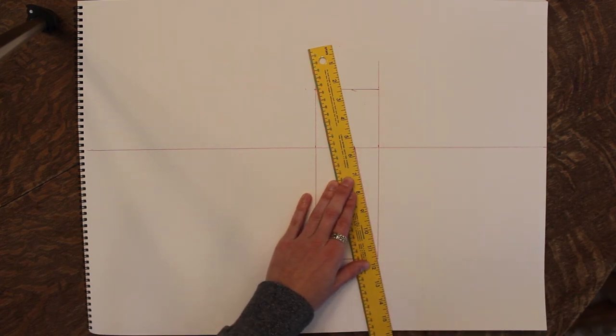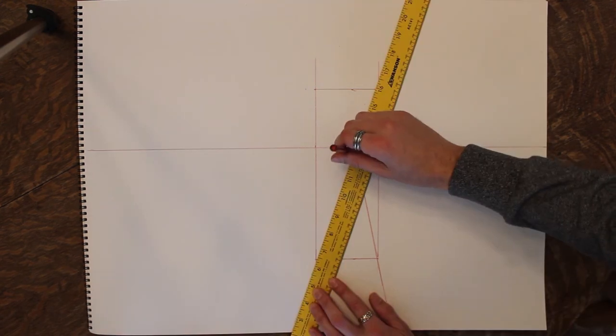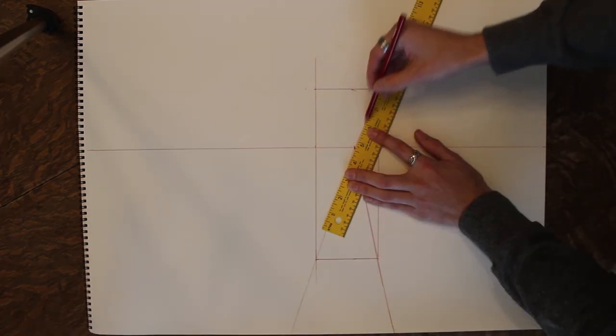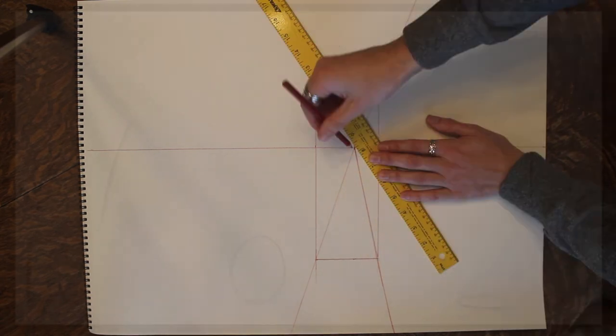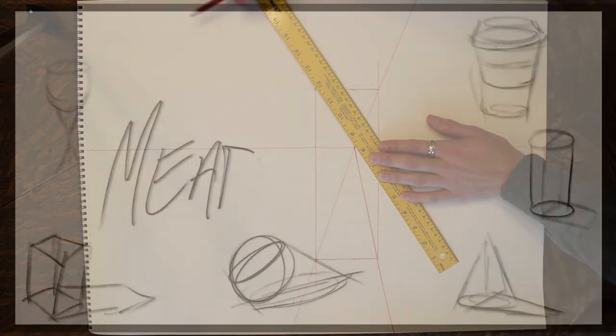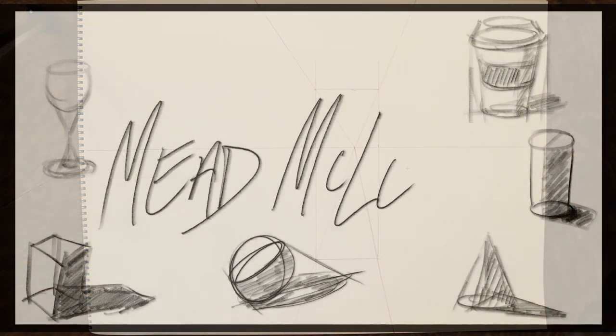And then all you have to do is connect the dots. You go from the corner of the box to the vanishing point and outward. And you want to leave these lines there the entire time. There you go.